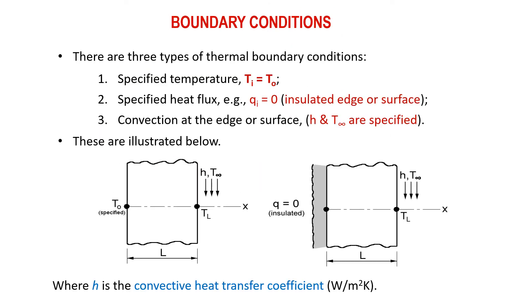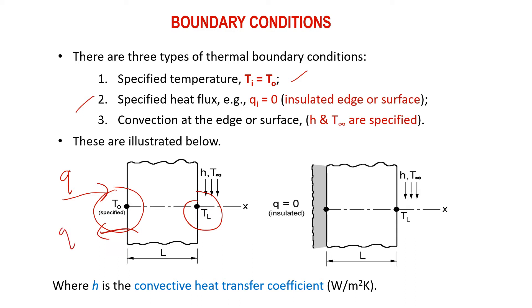In a steady state heat conduction problem, there are three types of thermal boundary conditions. The first one is a specified temperature, meaning that the temperature at the outer wall, either on the left or on the right side, is being specified. The second boundary condition is the specified heat flux, meaning that there is a heat flux flowing into or out of our system. The last one is the convection at the edge of surface, which takes into account the convection process occurring on either side of the wall due to the ambient condition.